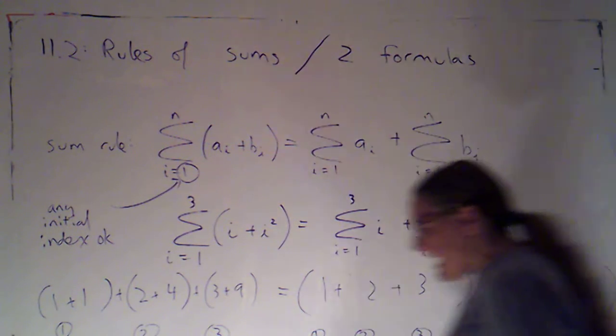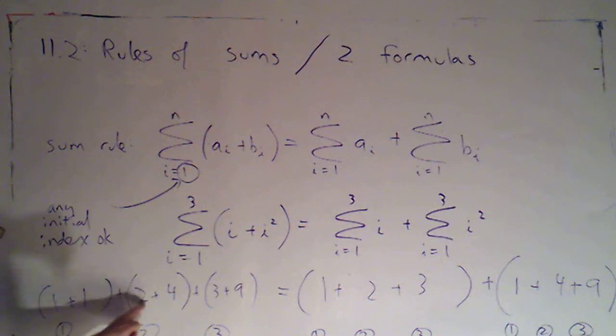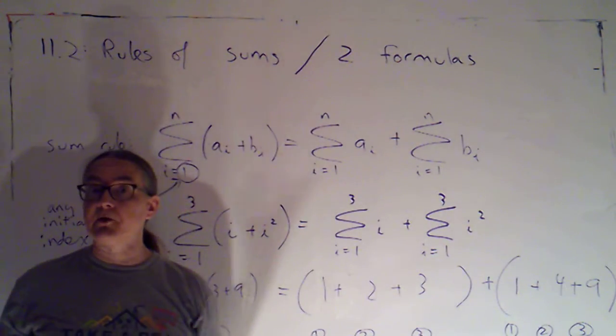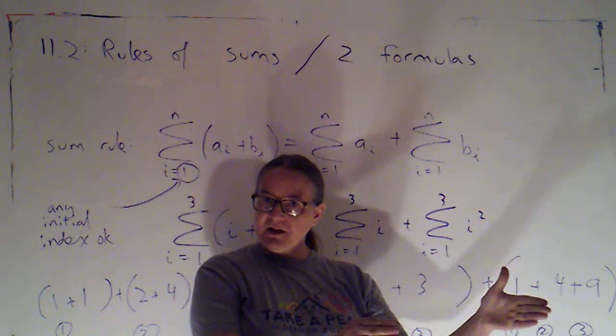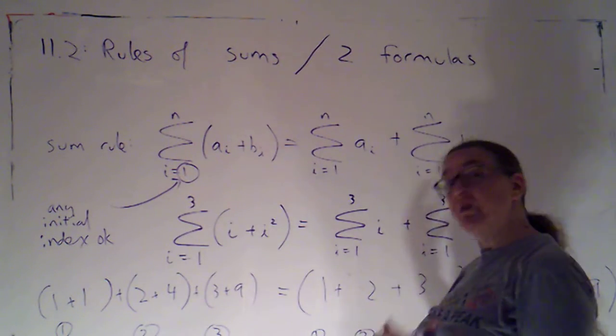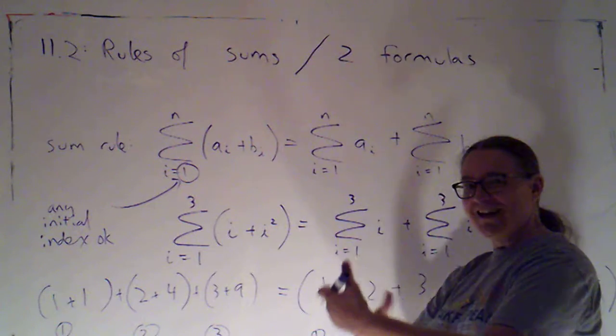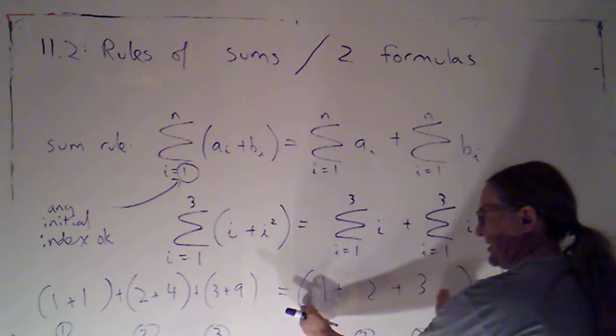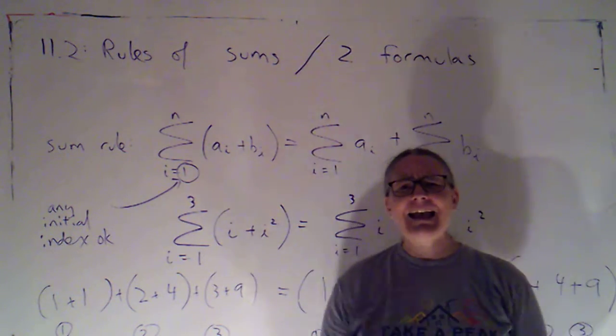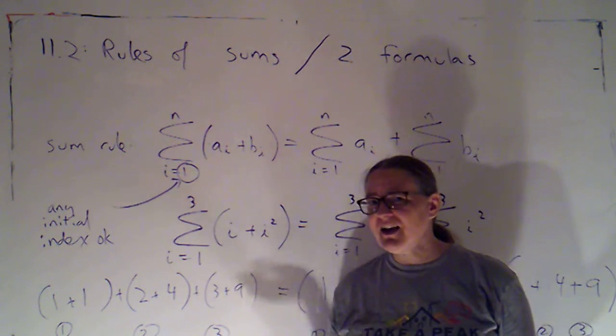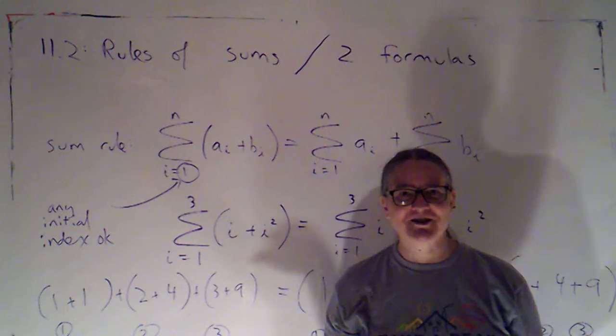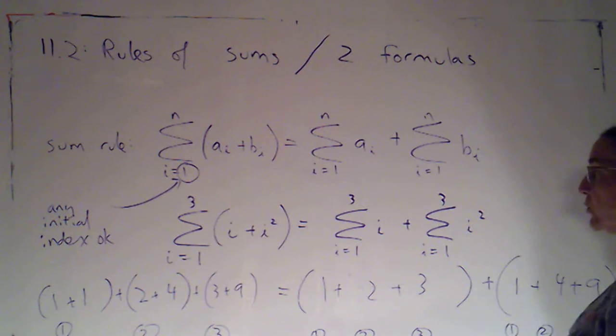So either way, I'm adding up the same six numbers. They're just arranged in a different order and grouped differently. So we actually call that the commutative property when you change the order of things, and it's the associative property when you change how the parentheses group the terms. But basically, in plain English, we're just saying, hey, when I'm just doing a bunch of addition, the order in which I add the terms doesn't matter, and I can group the terms in groups with parentheses however I want to. And that's what this rule basically says.